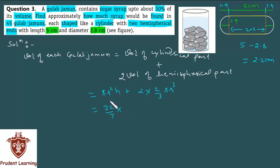Substituting the values we have 22/7 times the cylinder's radius 1.4 squared, times the height 2.2, plus 2 times 2/3 times 22/7 times the hemispherical part's radius 1.4 cubed.